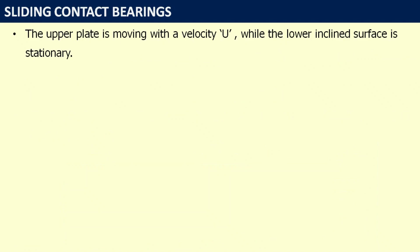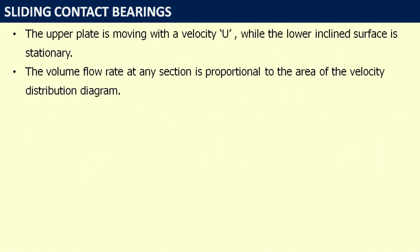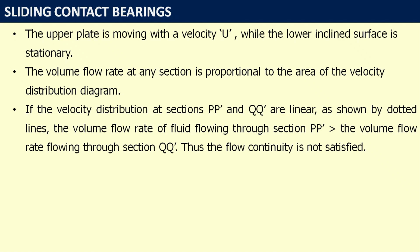The upper plate is moving with velocity U while the lower inclined surface is stationary. The volume flow rate at any section is proportional to the area of the velocity distribution diagram, so Q equals area times velocity. If the velocity distributions at sections P-P' and Q-Q' are linear as shown by dotted lines, the volume flow rate through section P-P' is greater than through section Q-Q'. Therefore, since the flow rates differ, flow continuity is not satisfied.